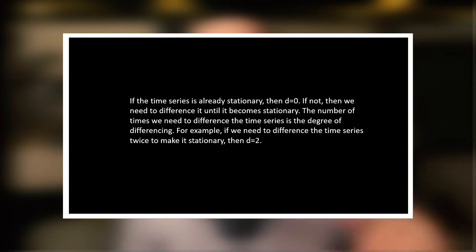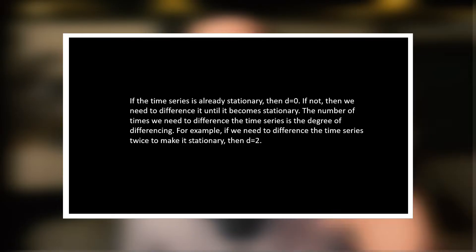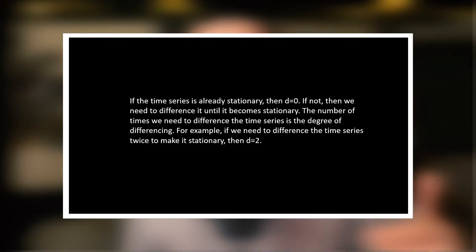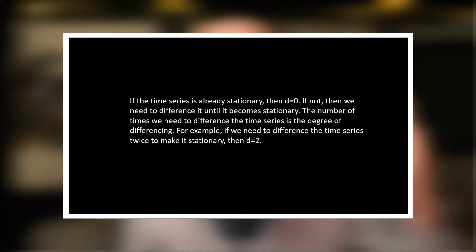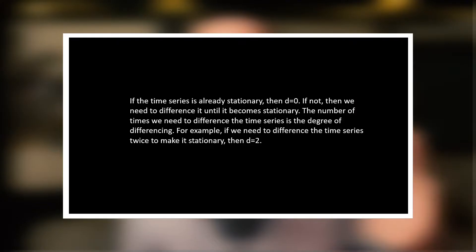D stands for the degree of differencing — the number of times you need to differentiate your time series to make it stationary. If the series is already stationary, then D equals zero. If not, we difference it until it becomes stationary. For example, if we need to difference the time series twice to make it stationary, then D equals two.